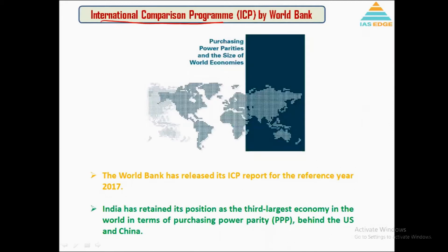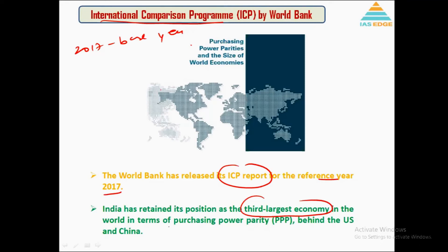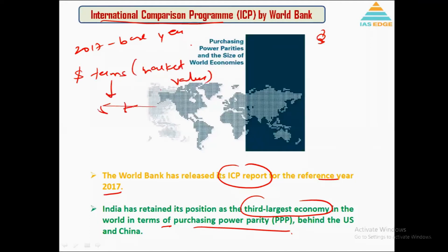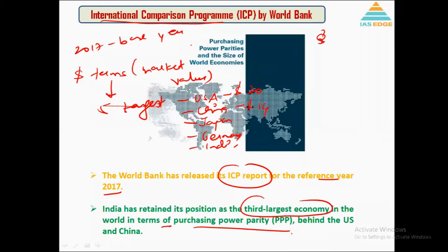Next topic: the International Comparison Program by the World Bank. The World Bank has released the ICP report for the reference year 2017. As per the report, India is the third largest economy in the world by purchasing power parity. By dollar market value, India is the fifth largest economy — after USA (around 20 trillion), China (around 14–15 trillion), Japan (around 5–6 trillion), and Germany — with India at around 3 trillion.